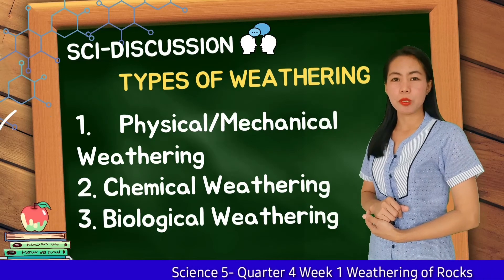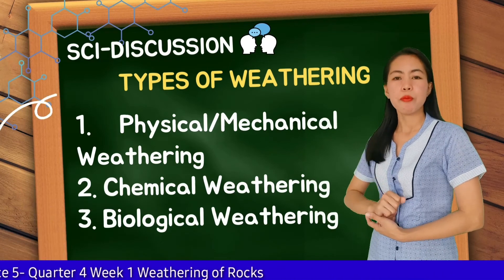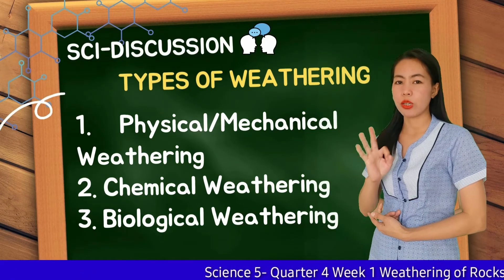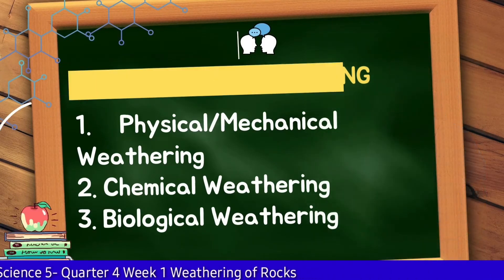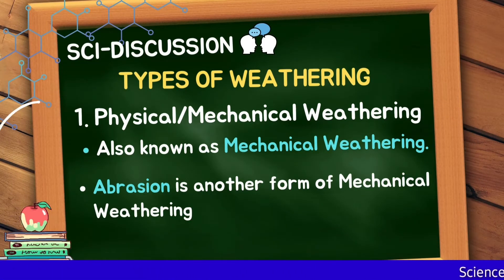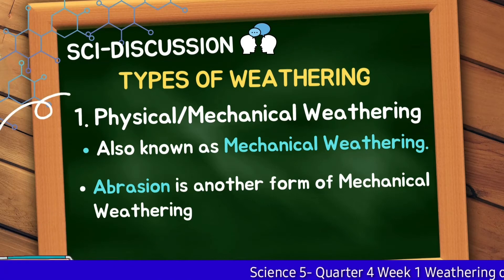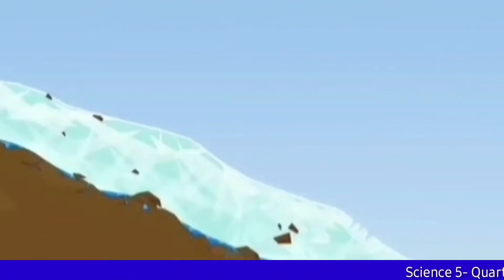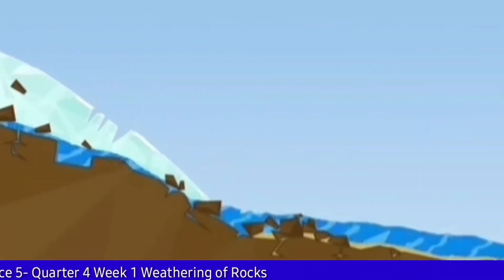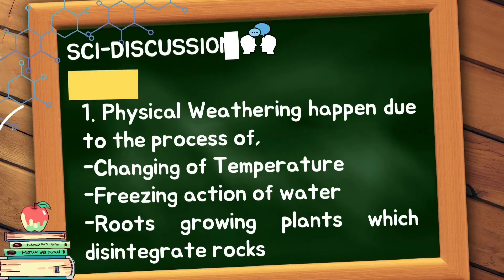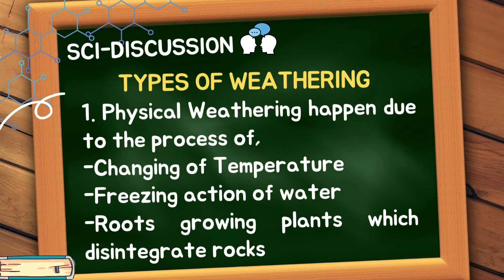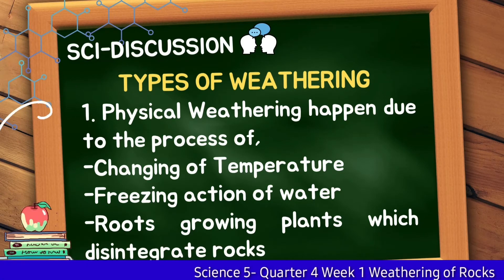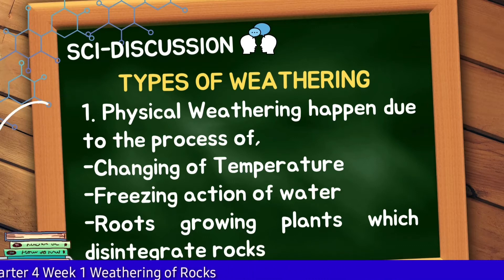There are three types of weathering. The first one is physical or mechanical weathering. The second is chemical weathering. And the third is biological weathering. Physical weathering, also known as mechanical weathering, includes abrasion — gravity causes abrasion as a rock tumbles down a mountain slide or a cliff. Physical weathering happens due to the process of changing temperature, the freezing action of water, and roots of growing plants which disintegrate rocks.